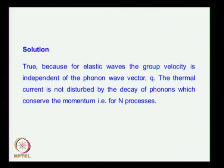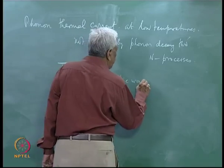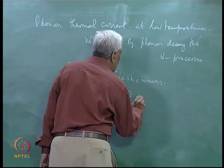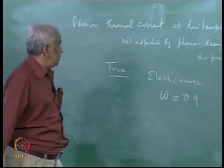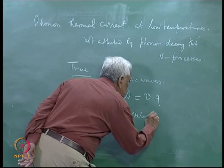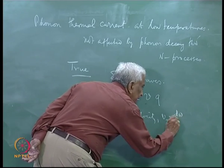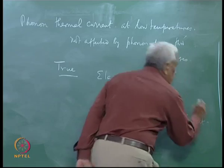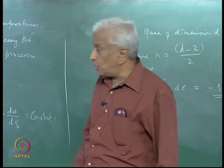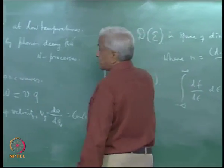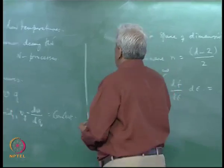The reason for this is: phonons are excitations of elastic waves, and therefore the dispersion relation is ω = vq, where q is the phonon wave vector and v is the speed of sound. So the group velocity v_g = dω/dq is constant. Since the phonons have a constant group velocity, the thermal conduction is mainly determined by the group velocity of the phonons, and therefore the thermal current is not disturbed by the decay of phonons, which conserves momentum, because the group velocity is constant.